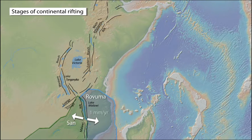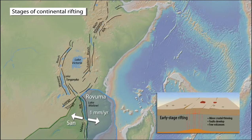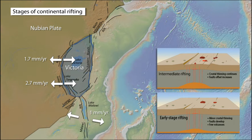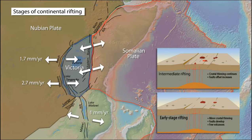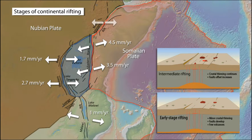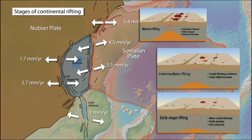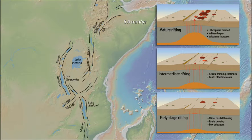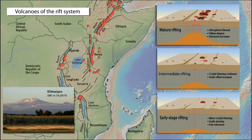In the south, the boundary between the Rovuma and San microplates is the Malawi Rift, where continental rifting is in an early stage with minor crustal thinning and a few volcanoes. In the central region, the boundary between the Victoria microplate and the Nubian plate is the western rift, where extension rates increase from north to south. The eastern rift is the boundary between the Victoria and Somalia plates, and extension rate increases from south to north. In this region, continental rifting is at an intermediate stage with increased volcanic activity. Across the boundary between the Somalian and Nubian plates at the Ethiopian rift, extension is faster and continental rifting is in a mature stage with more volcanic eruptions. Displaying the volcanoes of the East African rift system shows the anticipated pattern of volcanic activity increasing from south to north along with the stage of continental rifting.